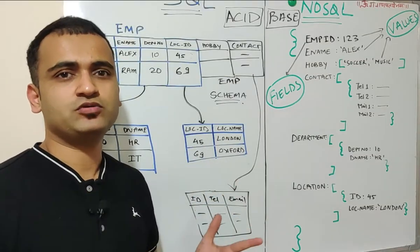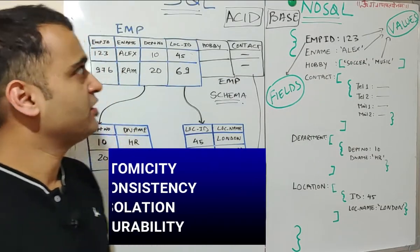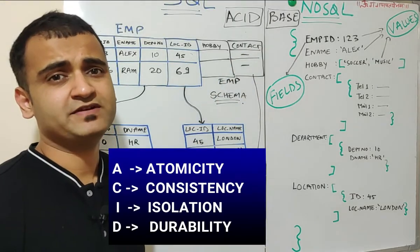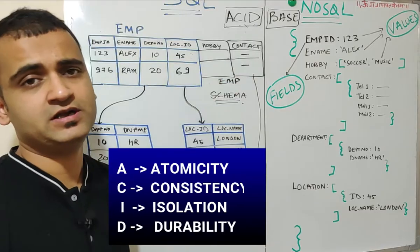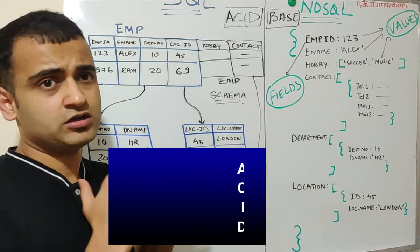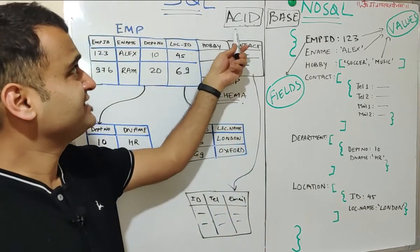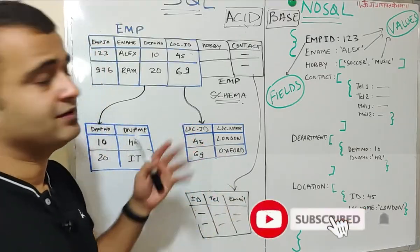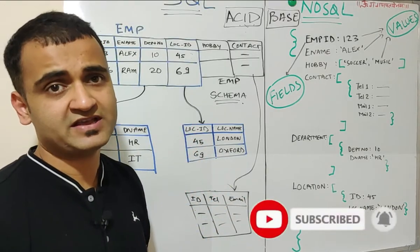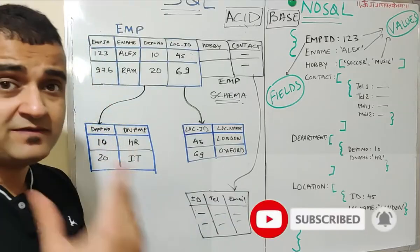So all your traditional SQL relational databases follow ACID compliance which stands for atomicity, consistency, isolation and durability. And unless the data coming in matches this compliance, that data cannot be accepted in a relational database, SQL database.